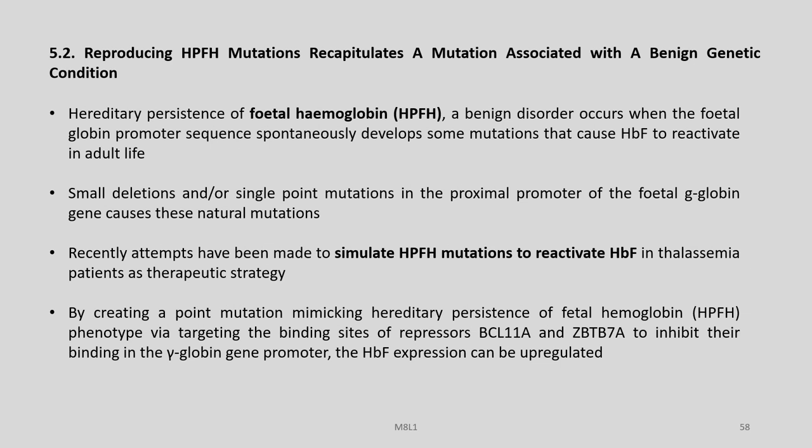Reproducing HPFH mutations recapitulates a mutation associated with a benign genetic condition. Hereditary persistence of fetal hemoglobin (HPFH), a benign disorder, occurs when a fetal globin promoter sequence spontaneously develops mutations that cause HbF to reactivate in adult life. Small deletions or single point mutations in the proximal promoter of the fetal globin gene cause these natural mutations. Attempts have been made to simulate HPFH mutations to reactivate HbF in thalassemia patients as a therapeutic strategy by creating point mutations that mimic HPFH phenotype, targeting the binding sites of repressors BCL-11A and ZBTB7A in the gamma globin gene promoter to upregulate HbF expression.